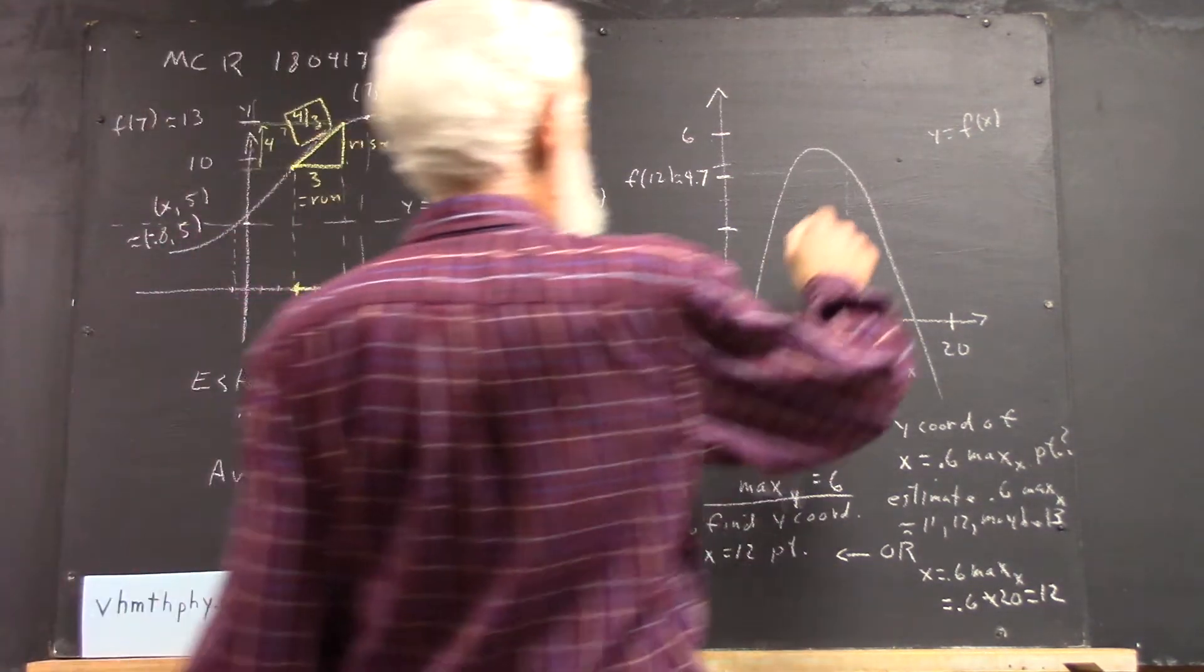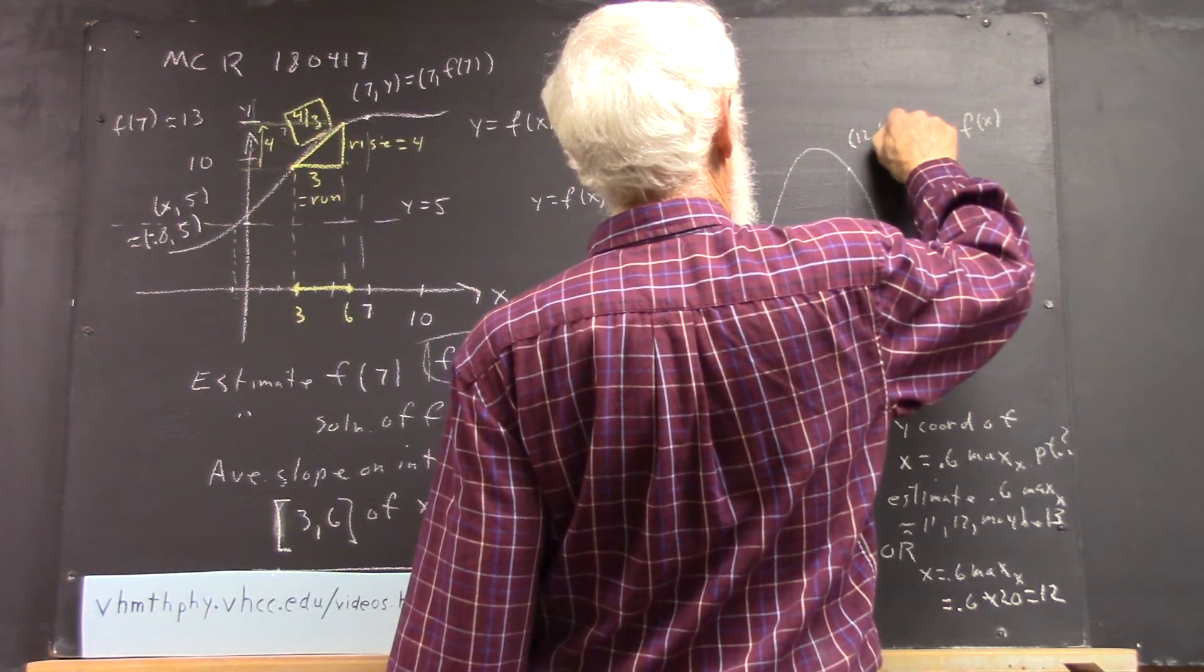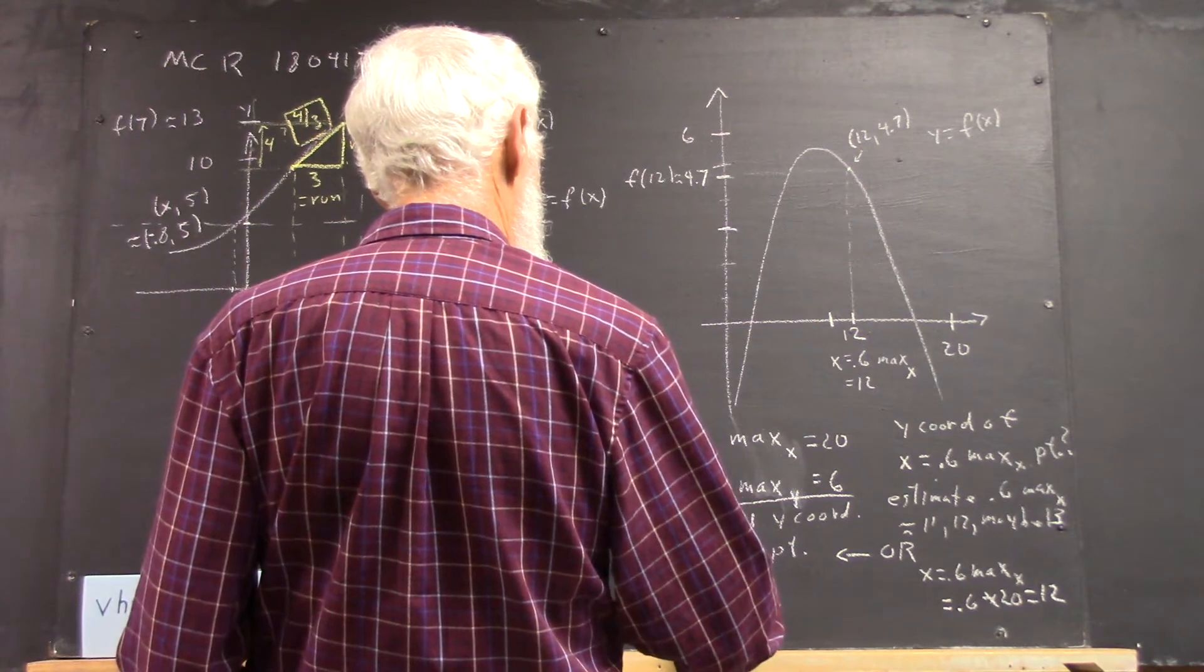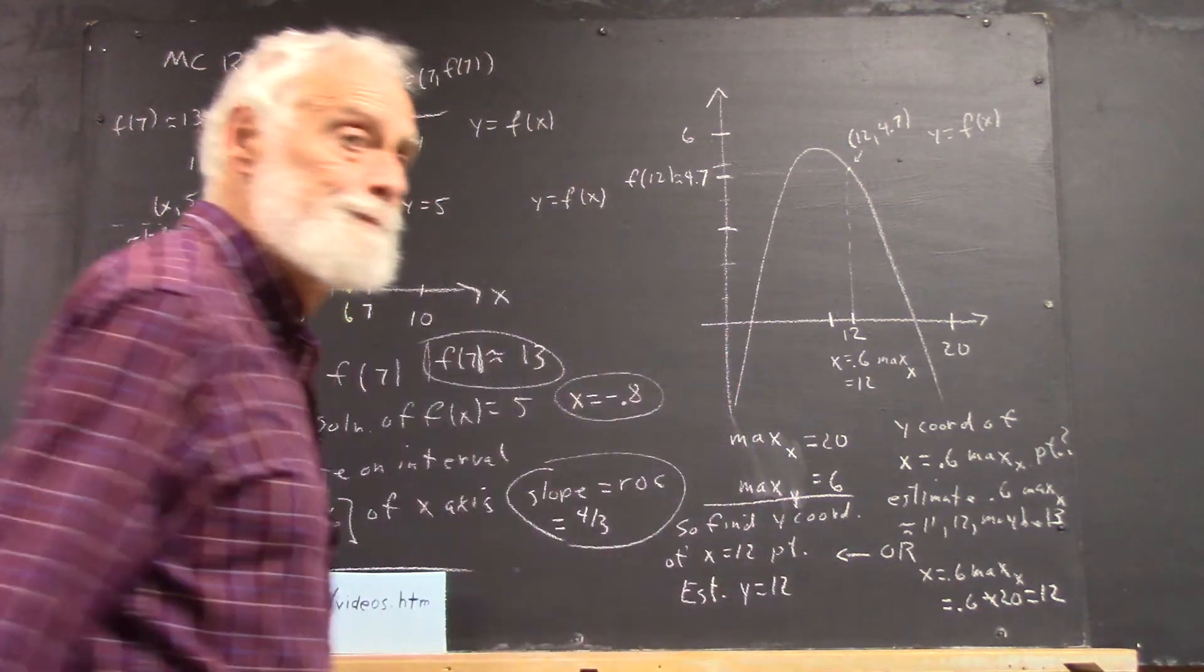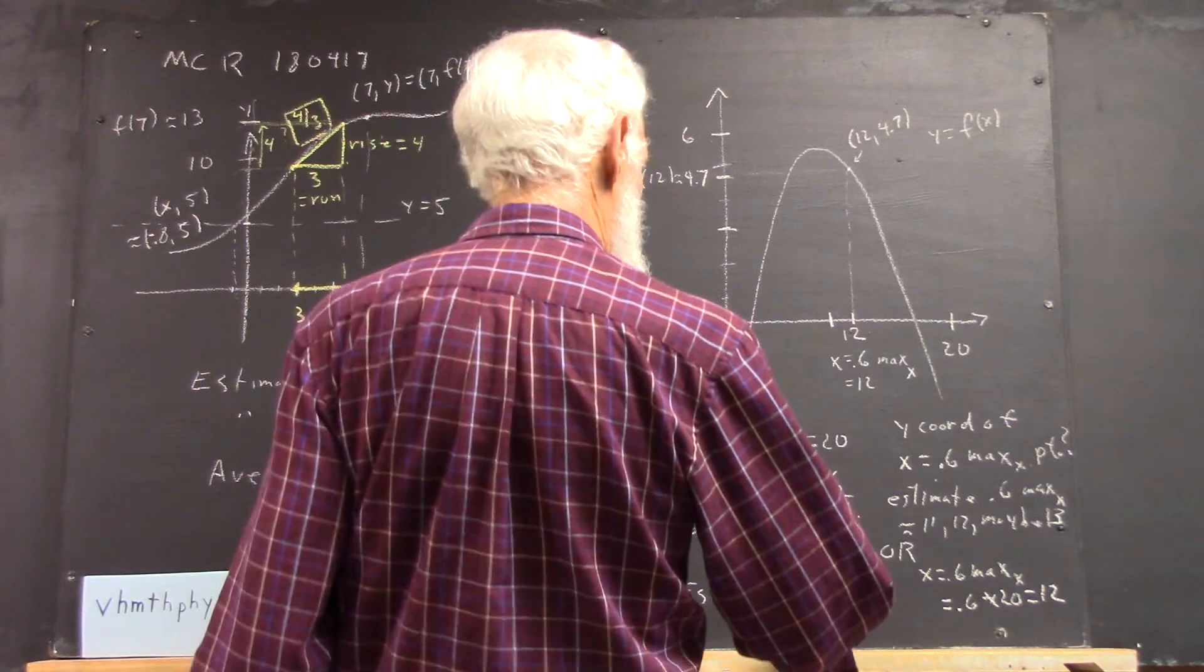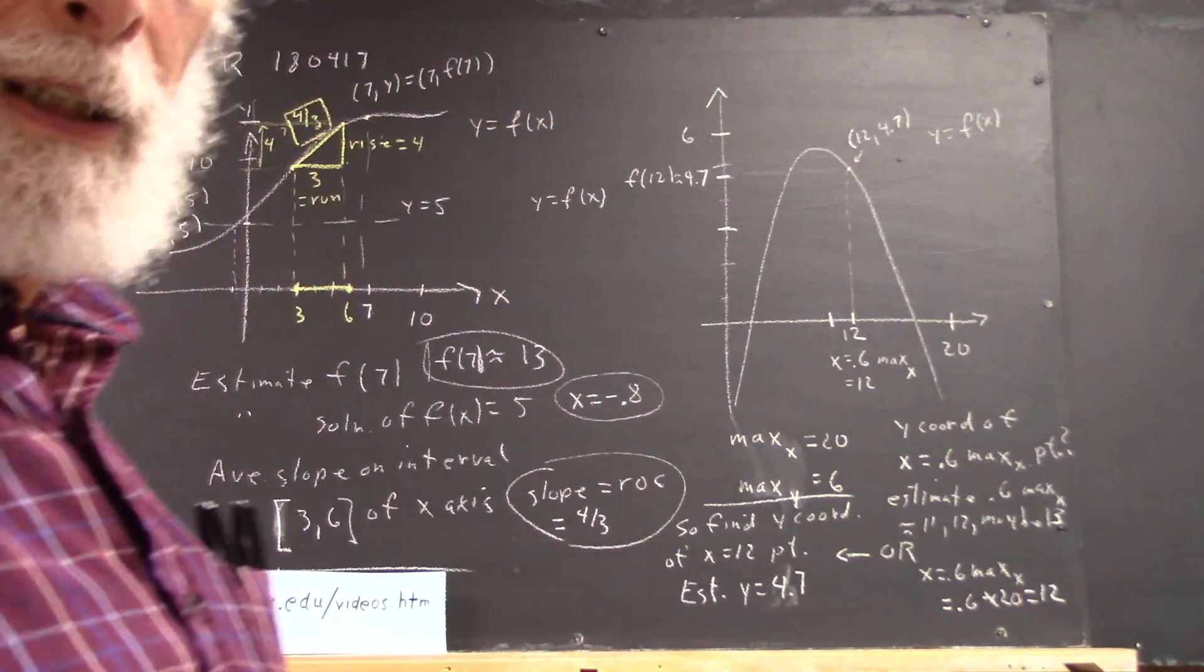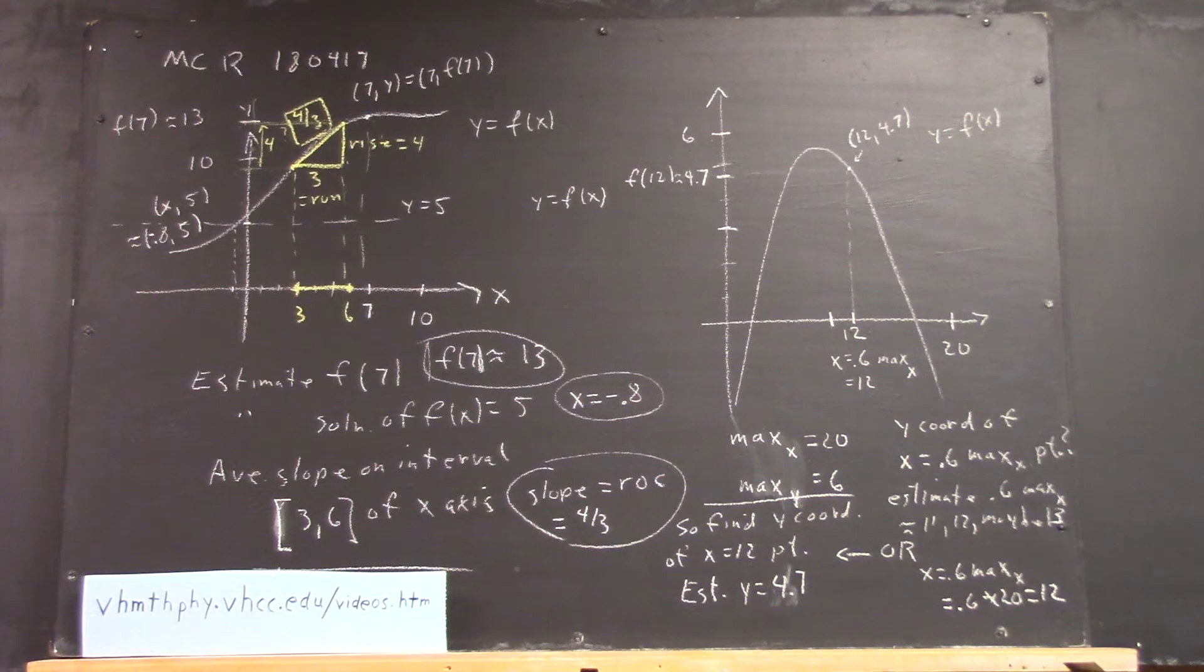And the coordinates of this point, of course, are 12, 4.7. We estimate, then, y equals 4.7, not y equals 12. I see that 12 and my hand wants to write it down. Losing control over the connection between my brain and my writing. Anyhow, there's our estimate. Does that make sense?